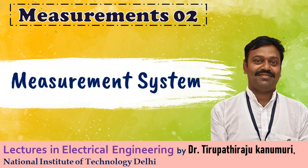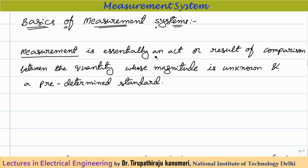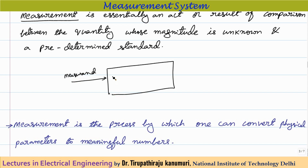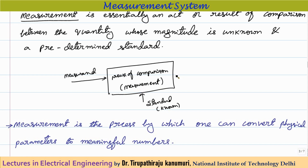Today we are going to discuss the basics of measurement systems. Measurement is essentially an act or result of comparison between a quantity whose magnitude is unknown and a predetermined standard. The unknown quantity is called the measurand, and it is compared against a known standard value. This process is called measurement, and as a result you get an output.